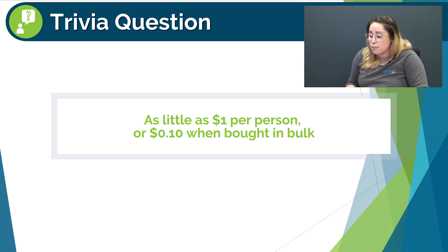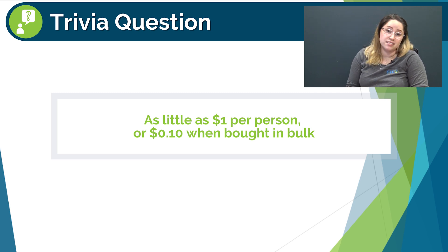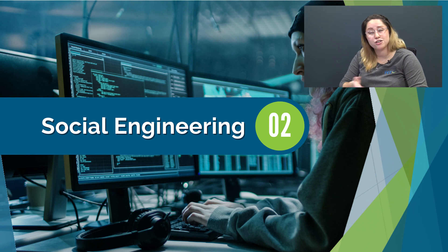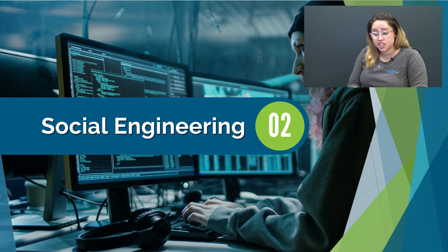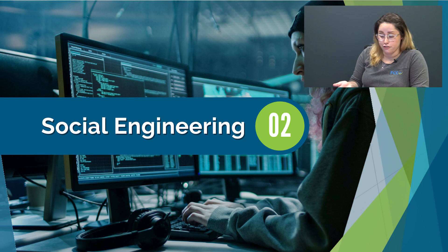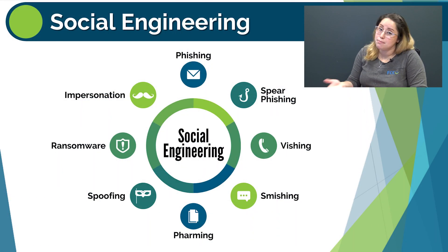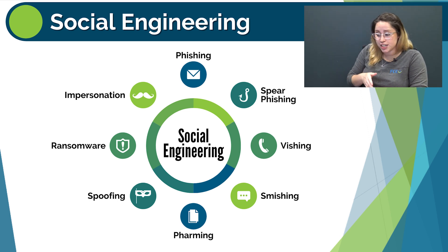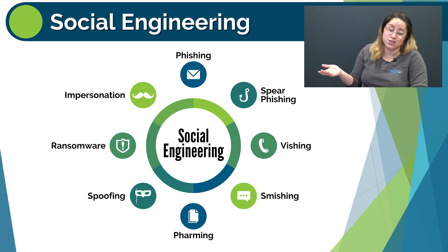If you'd like to learn more about how prices of information are determined on the dark web, check out the link in the description. So let's dive right into our second topic: social engineering. Social engineering is the manipulation of someone to gain confidential information. Social engineering can come in many forms and today we will be discussing spoofing, phishing, spear phishing, vishing, smishing, and impersonation. I promise these are all real words and real concepts.